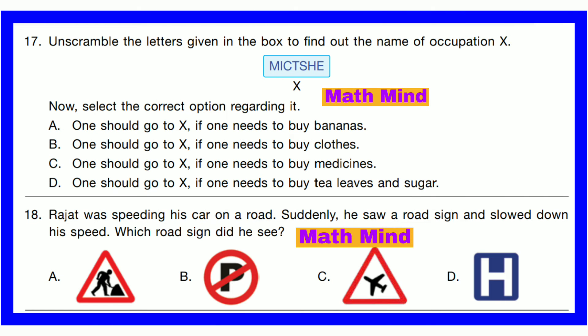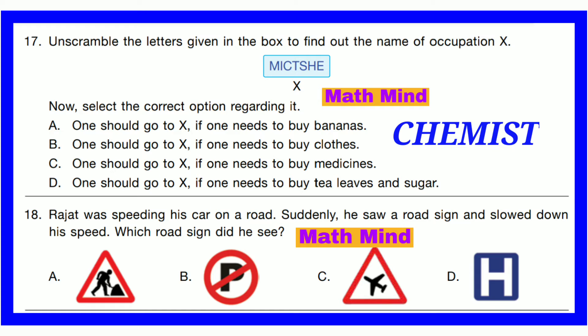Question number 17. Unscramble the letters given in the box to find out the name of occupation X. These are the given letters. Unscrambling the given letters, we get chemist. X is chemist. So option C is correct: one should go to the chemist if one needs to buy medicines.